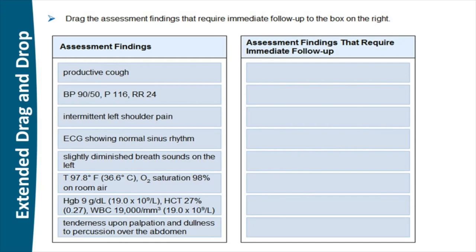Some item types from NGN are extensions of existing types, and others are brand new. So here's the extended drag and drop — drag the assessment findings that require immediate follow-up to the box on the right, from choices like productive cough, vital signs, intermittent left shoulder pain, and blood pressure findings.